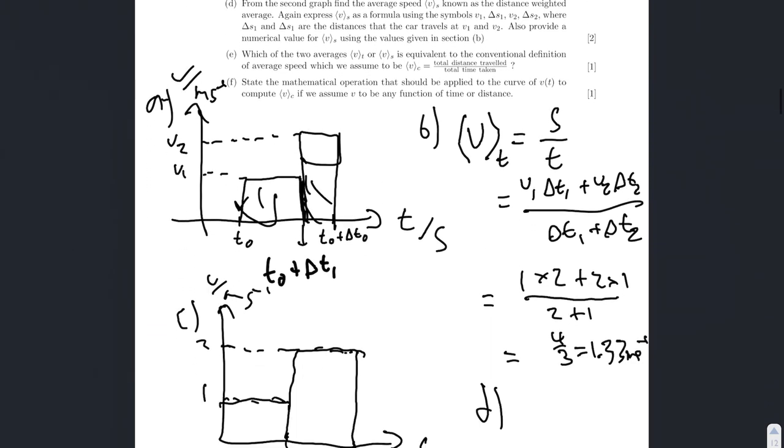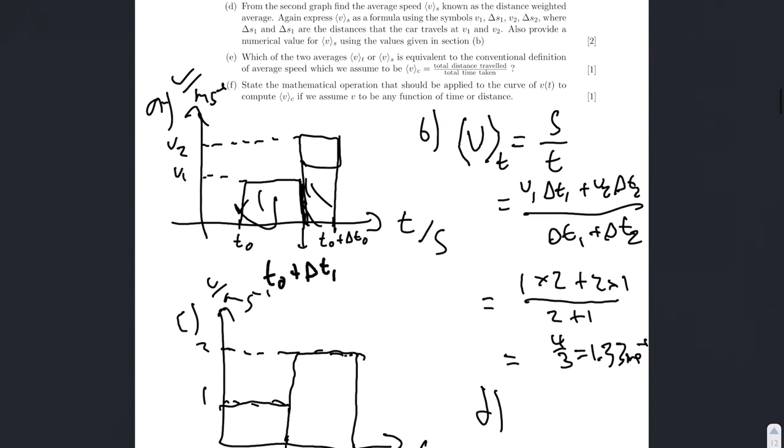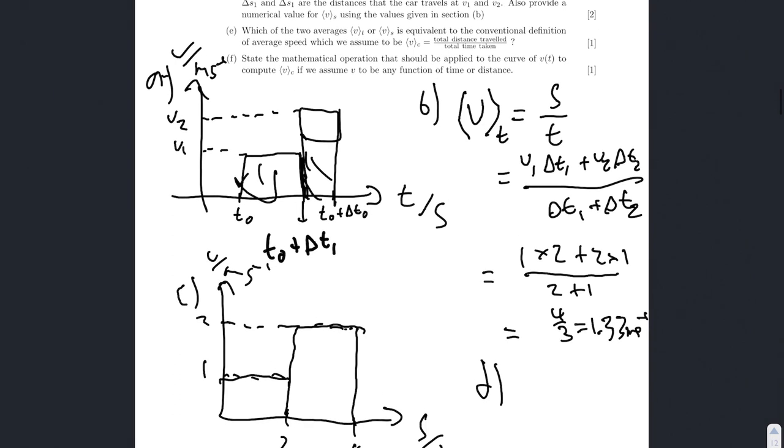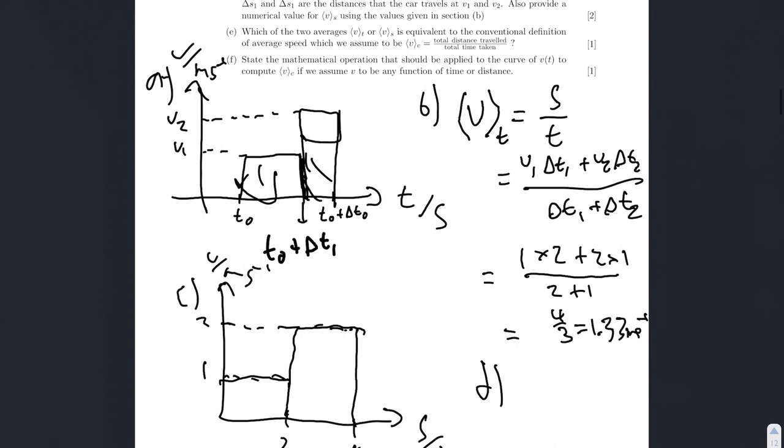From the second graph, find the average speed vs. Then it's the distance weighted average. So, this is a bit weird, but I guess it's just the same. But instead of using delta t1, we use delta s1.